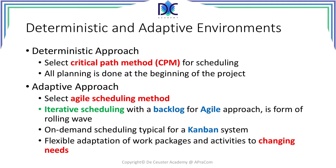Let's look at the difference between a deterministic and adaptive environment when planning projects. In the deterministic approach, scheduling is done by the critical path method, which we will see later in chapter 7. All the planning is done at the beginning of the project.